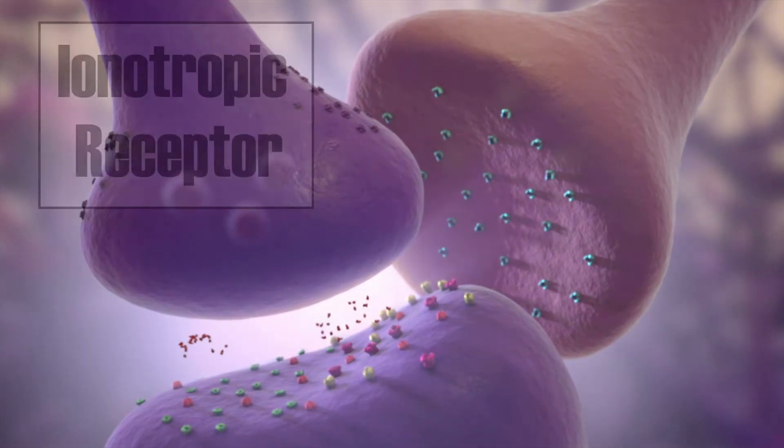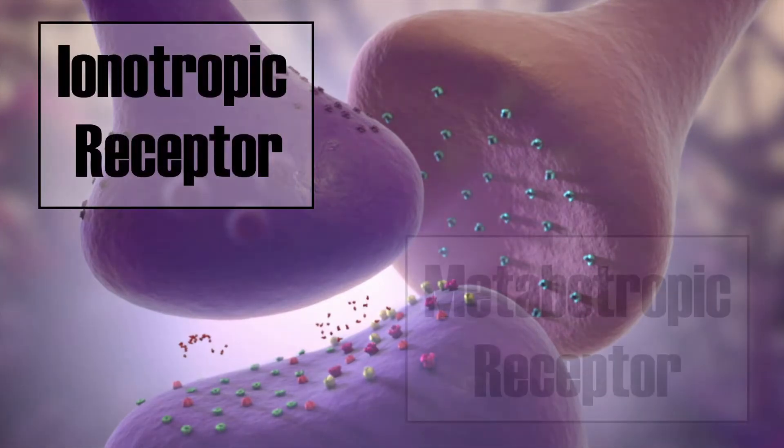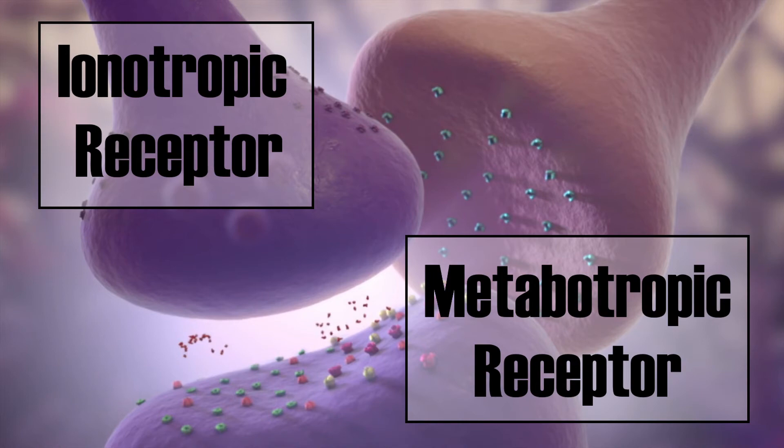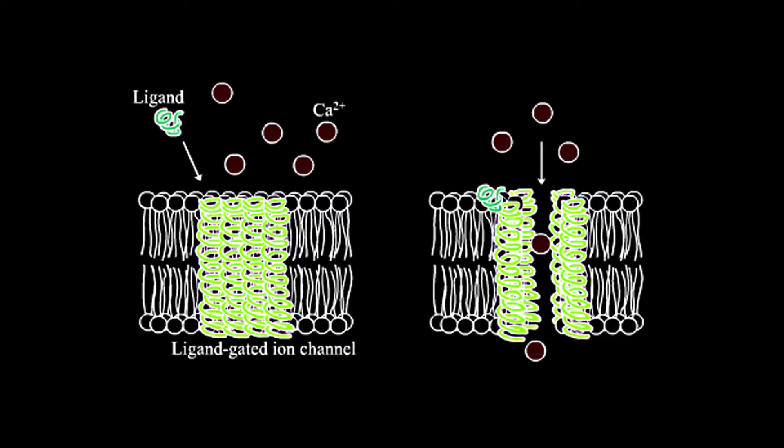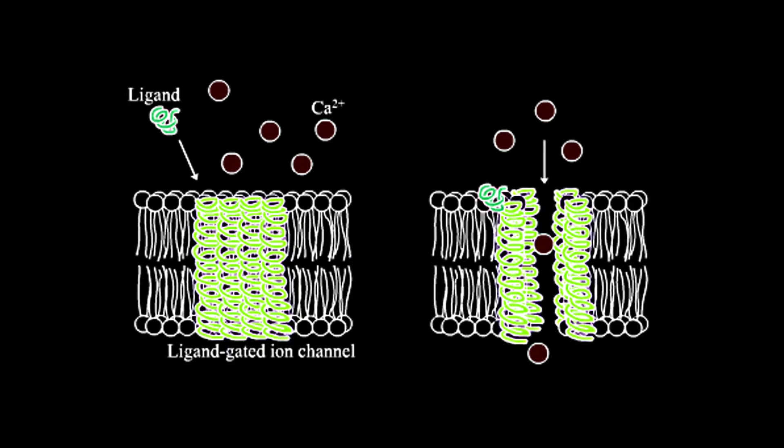First, there is a distinction between ionotropic receptors and metabotropic receptors. When glutamate, or some other neurotransmitter, couples to a ligand ionotropic receptor, ion channels are opened that allow for the influx of, for example, sodium, potassium, or calcium.